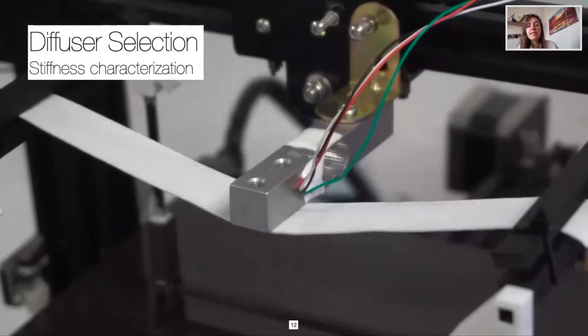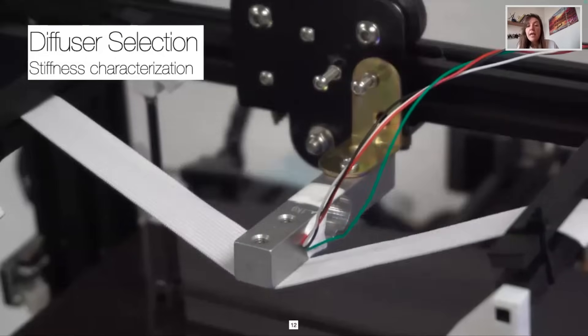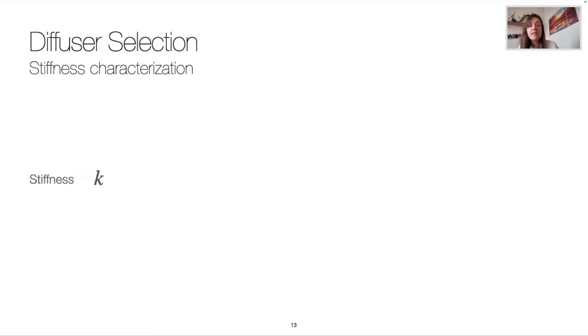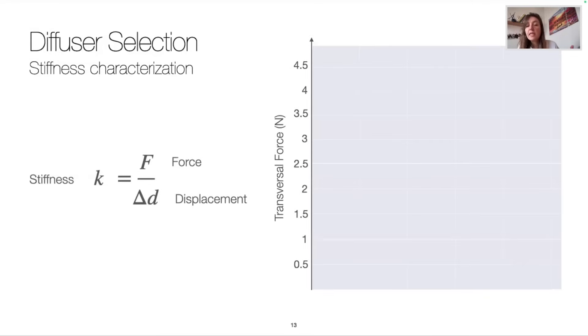First, we characterized each of the sample's stiffness using a load cell attached to a 3D printer. Stiffness is defined as force over displacement. Here we plot on the y-axis the transversal force in Newton and on the x-axis the transversal elongation in millimeters.